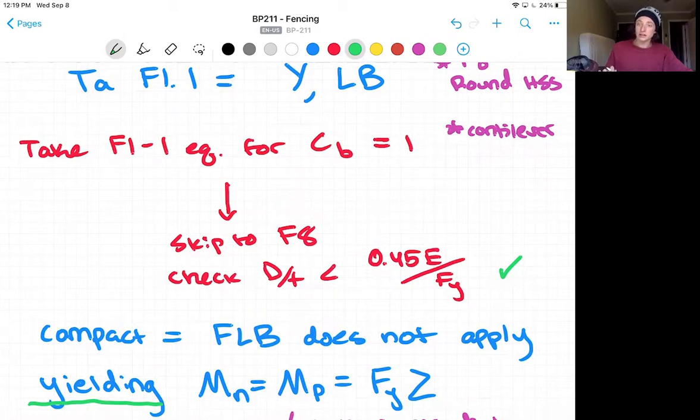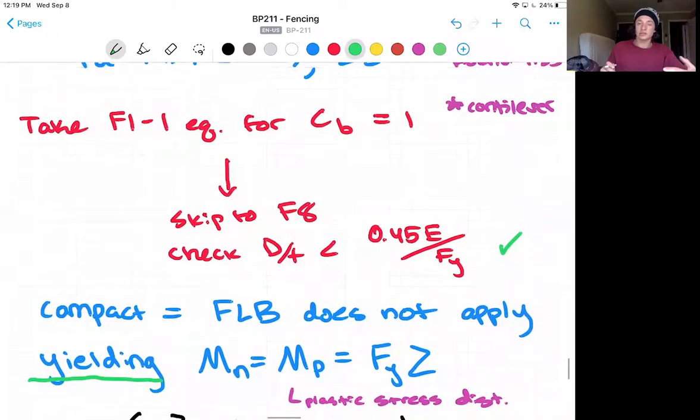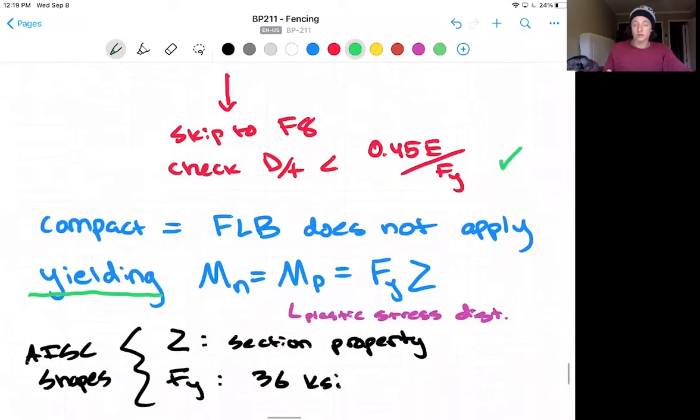And our equation here is that our nominal moment capacity is going to be equal to our plastic stress distribution, which is FY times Z. As you may remember from previous lectures, Z is just a section property we can find in our AISC shapes database. And because we're using a symmetrical member, it doesn't matter whether it's the Y, ZY, or ZX. And FY is our yielding capacity of the steel, which we've taken as 36 KSI.